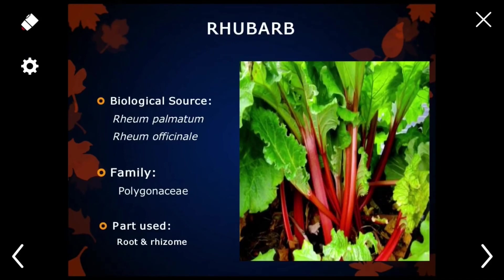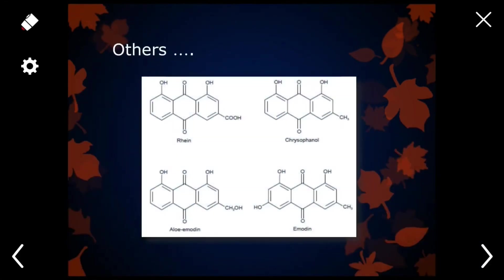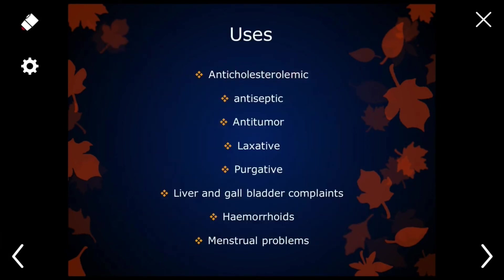Rhubarb. Biological sources: Rheum palmatum, Rheum officinale; family Polygonaceae; part used: roots and rhizomes. Rhubarb contains rhein and anthrone. Other compounds present in rhubarb are rhein, chrysophanol, aloe-emodin, and emodin. It reduces cholesterol level. It is used as an antiseptic agent, anti-tumor agent, laxative agent, and purgative agent. It is also used in liver and gallbladder complaints, and for the treatment of hemorrhoids and menstrual problems.